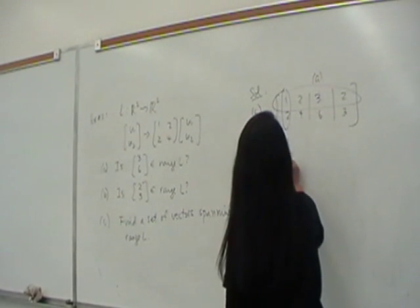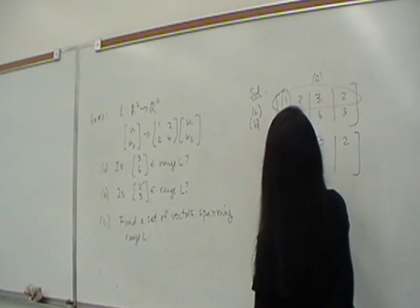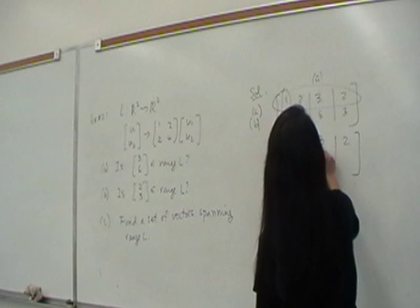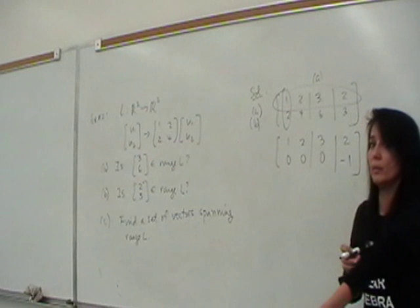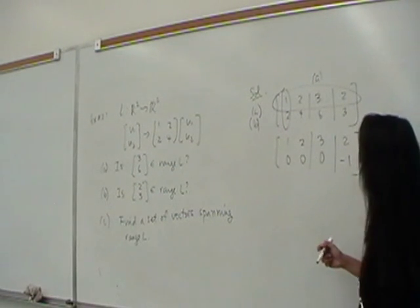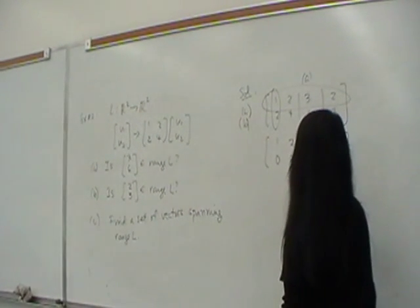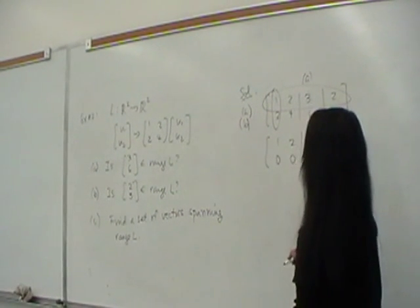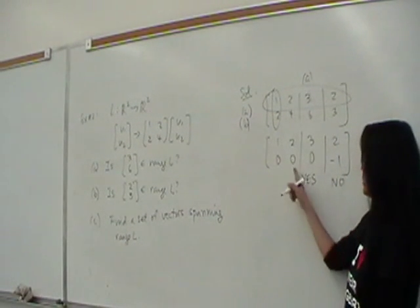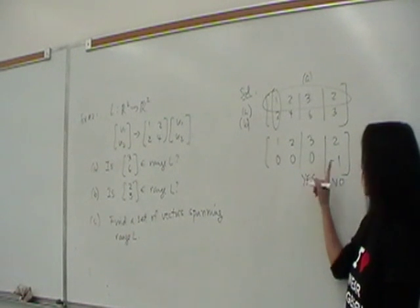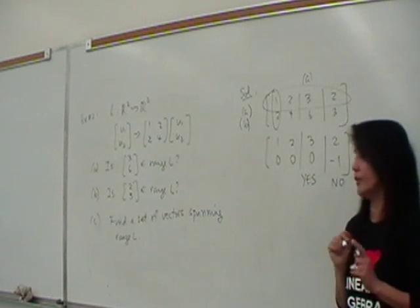So then I'll get 1, 0, 2, 3, 2, 0, 0, 0, 3 minus 4, negative 1. Let's interpret our answer here. So what's the answer to A? Is it yes or no? Yes. The answer to A is yes. The answer to B is no. You understand why? Because here it's a consistent system you got, right? And here you said, 0 cannot be negative 1. So no, 2, 3 is not in the range of L. Very good.